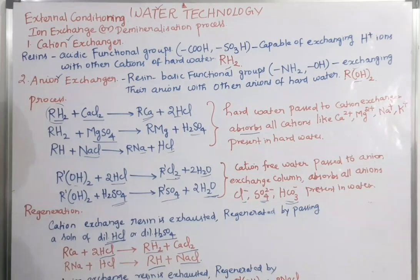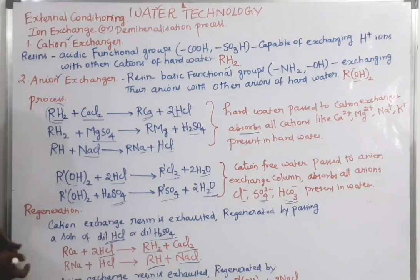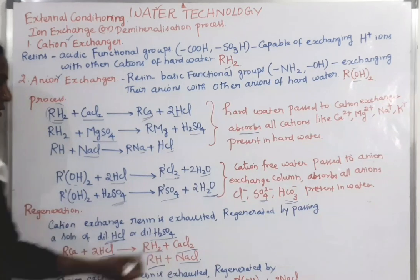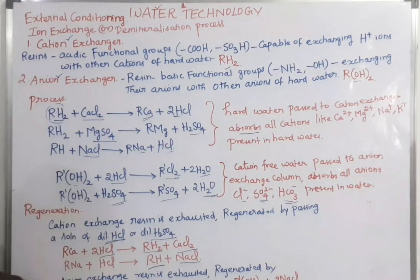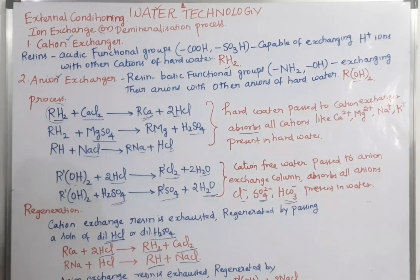Next we will see about the regeneration. When the cation exchanger is exhausted, it is regenerated by passing dilute HCl or dilute sulphuric acid. Similarly, when the anion exchanger resin is exhausted, it is regenerated by passing dilute sodium hydroxide.